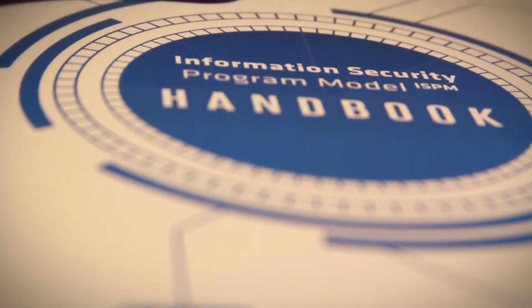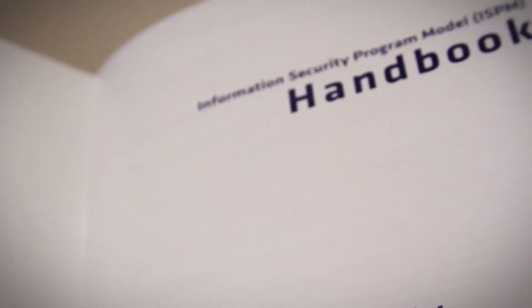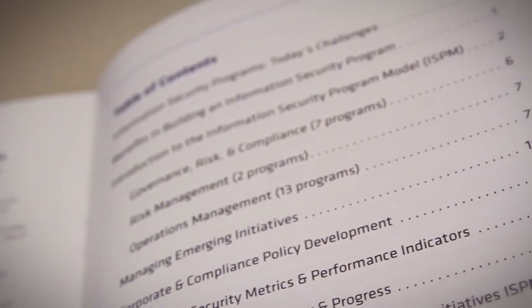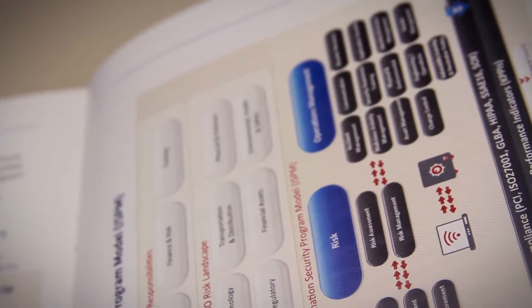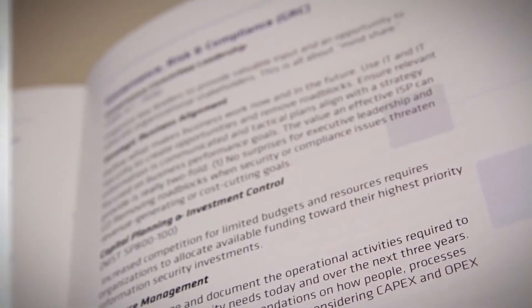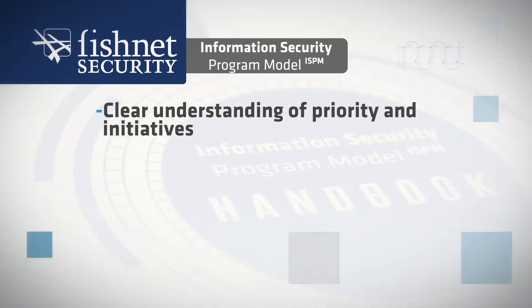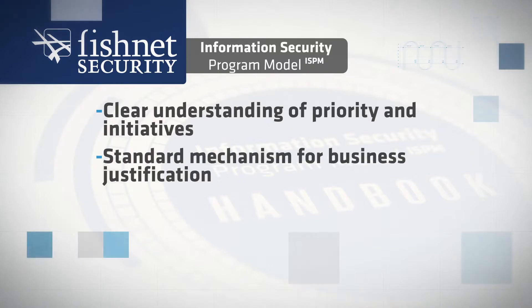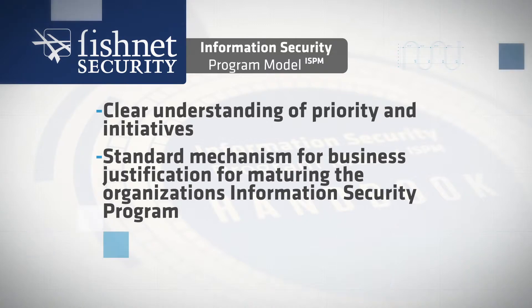The Information Security Program Model is a security program maturity model that assists organizations to ensure all key elements of an information security program are considered and consistently evaluated to assess the current state of one's information security program maturity. In completing this exercise, the ISPM provides C-level executives a clear understanding of priority and initiatives, as well as a standard mechanism for business justification for maturing the organization's overall information security program to executive audiences.